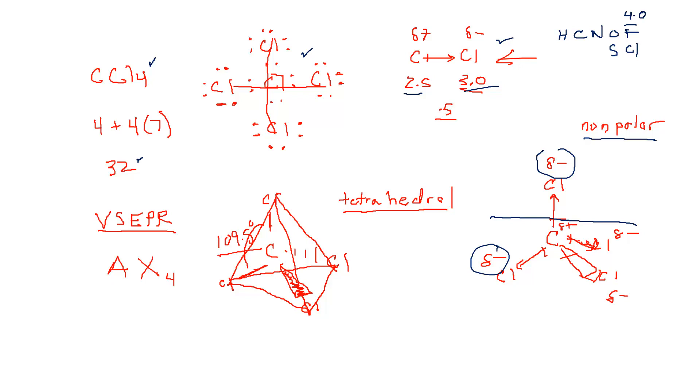Once we evaluate the electronegativity difference, we now know this is a polar covalent bond. So we now have one half of the equation to make a polar molecule. That means a molecule that has a positive and negative end.